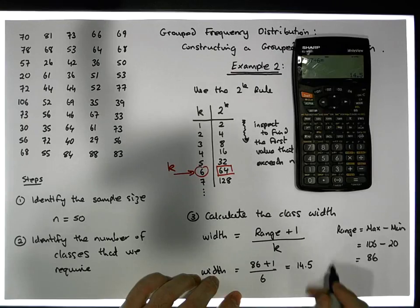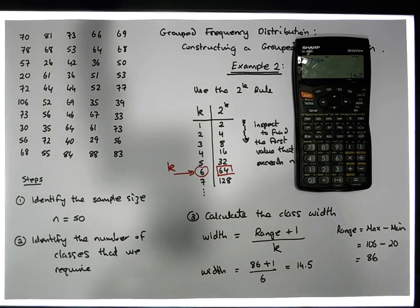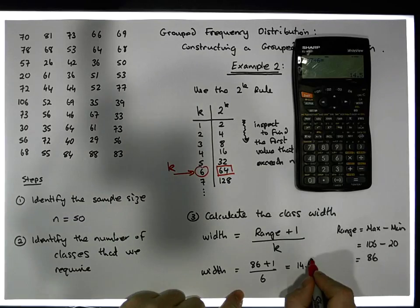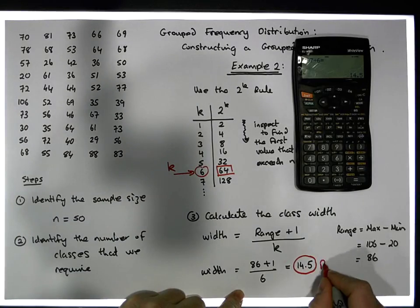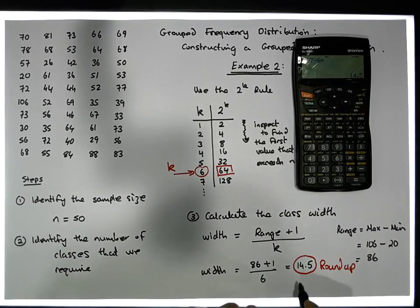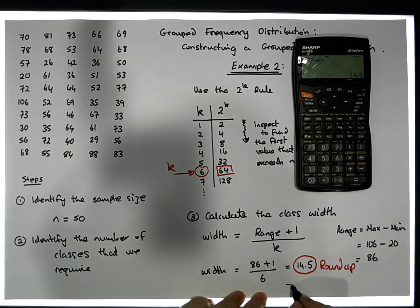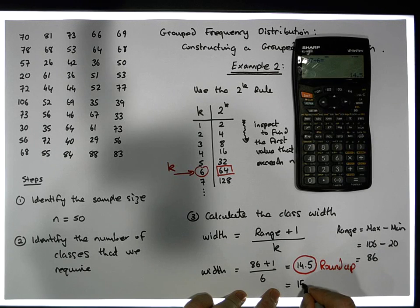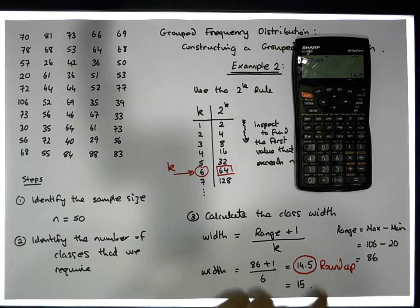What we do now is round up — we always round that value up. In which case we're going to say that our class width is equal to 15. So 14.5 rounded up is 15.